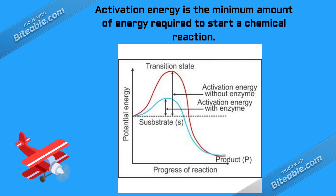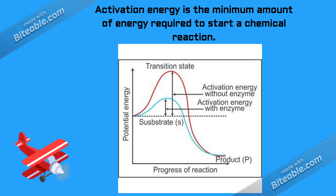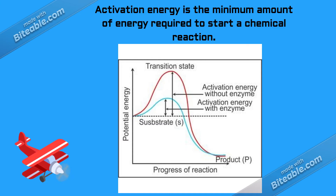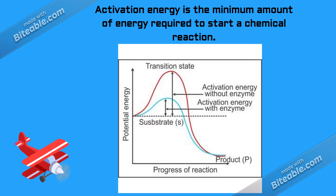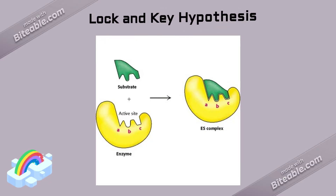Both curves show that the product is eventually formed in both circumstances. The only difference is that with the enzyme it is formed faster, and without the enzyme it is formed a lot slower — you have to wait longer and invest more time, money, and energy. That is why the blue curve is not as deep as the red curve. This is why enzymes are very efficient and are often preferred in industries or factories.